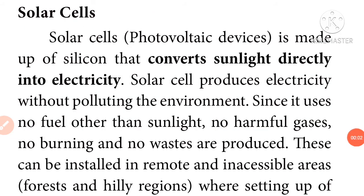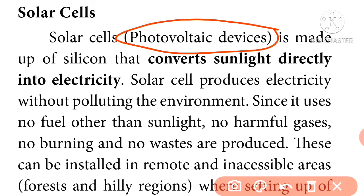Solar cells are photovoltaic devices. They are made of silicon. Silicon converts sunlight directly into electricity. Silicon is a semiconductor — it conducts electricity partially, unlike a full conductor or an insulator.